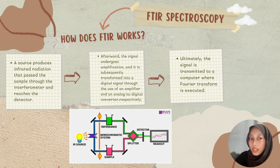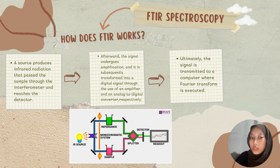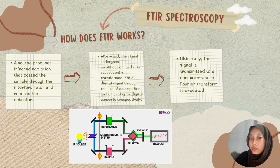How does FTIR work? A source produces infrared radiation that passes through the sample, through the interferometer, and reaches the detector. Afterward, the signal undergoes amplification and is subsequently transformed into a digital signal through the use of an amplifier and an analog-to-digital converter. Ultimately, the signal is transmitted to a computer where the Fourier transform is executed.